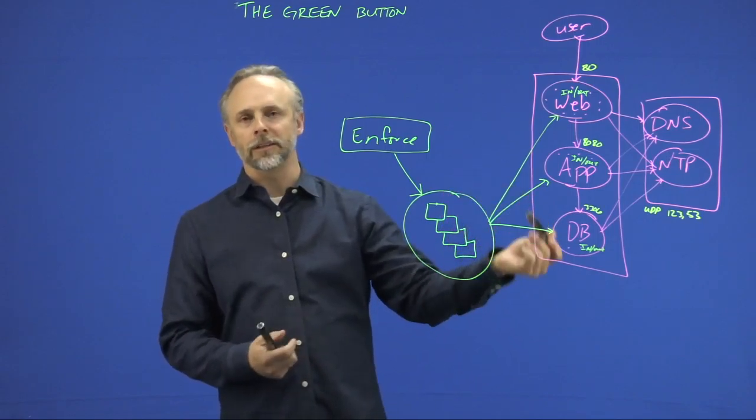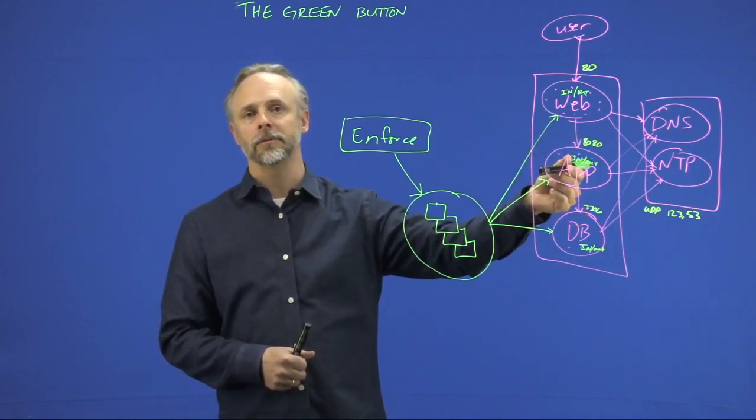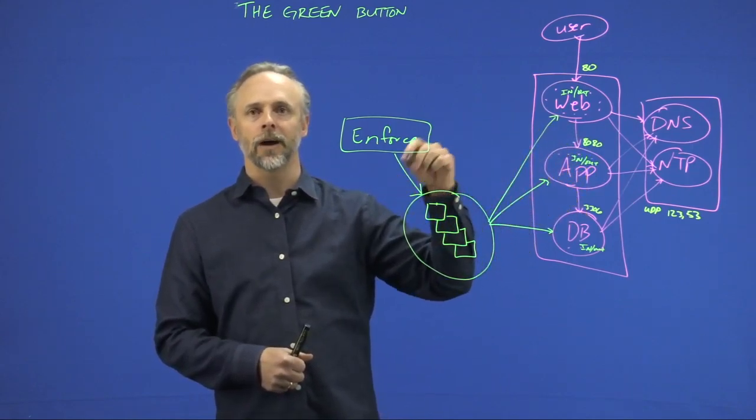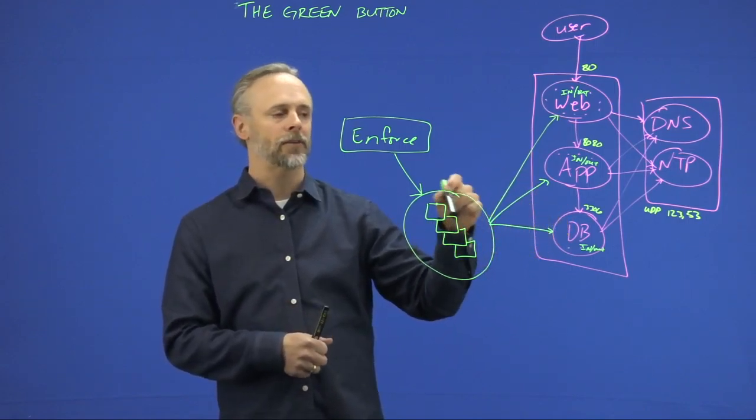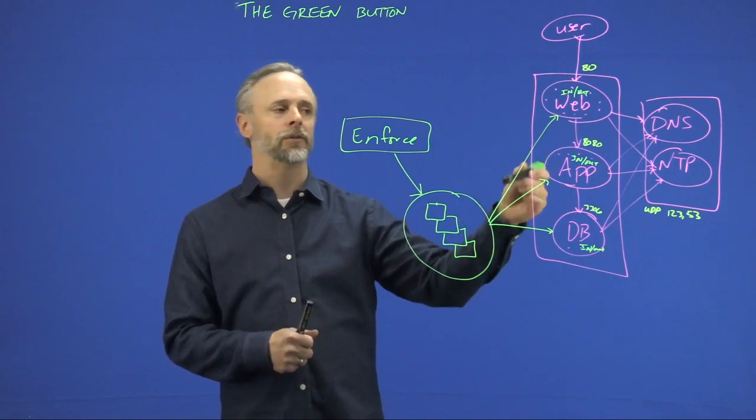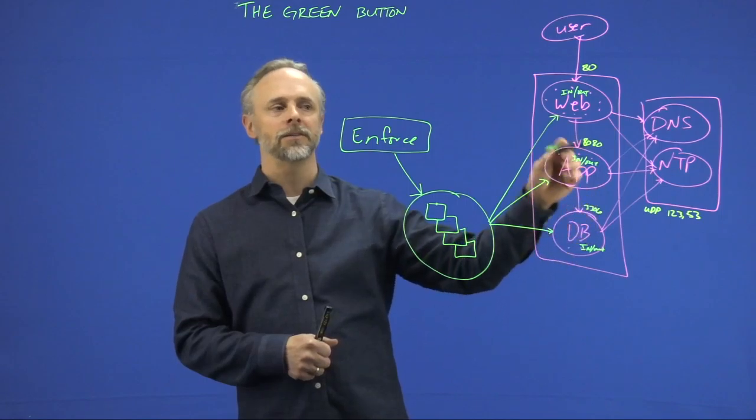So if we are using Linux, we would push rules down to IP tables, and we would manage those through IP tables and IP sets on that host. If you're using a Windows device, we would push the rules down to the Windows advanced firewall.